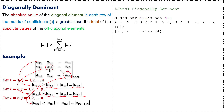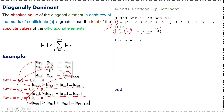Now we write the MATLAB code following the same steps. We can see the initial commands: clc, clear all, and close all. This is the coefficient matrix which we want to check for diagonal dominance. We use the size command to check the number of rows and number of columns in the matrix.